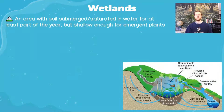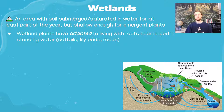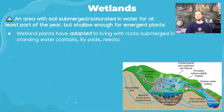Wetlands are areas where the soil is submerged in water for all or part of the year. An important characteristic is that they have emergent plants or emergent vegetation, where the plants have their roots anchored in the soil but part of the plant extends up and out of the water. These plants are adapted to living in these conditions, since most plants cannot survive with their roots totally submerged — they wouldn't be able to get the oxygen they need.